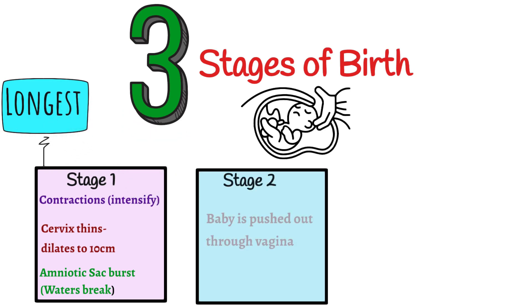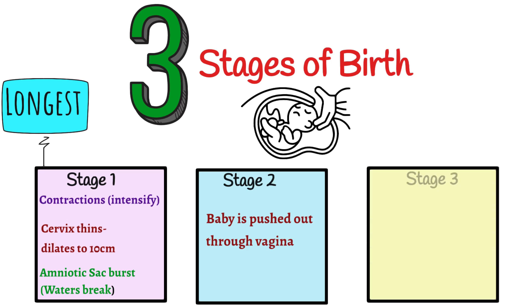Stage two is where the baby is pushed out through the vagina, out of the woman's body. Stage three is the delivery of the afterbirth, commonly referred to as the placenta.